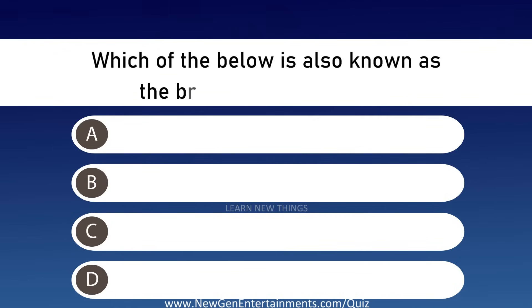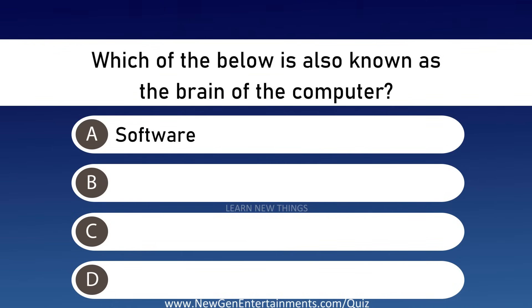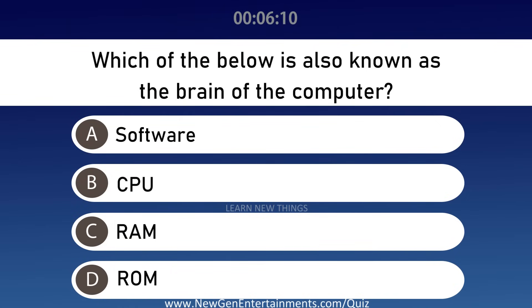Which of the below is also known as the brain of the computer? Options are A: Software, B: CPU, C: RAM, and D: ROM. Answer is Option B, CPU.